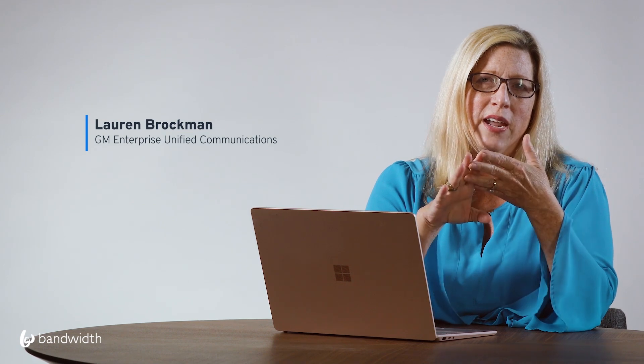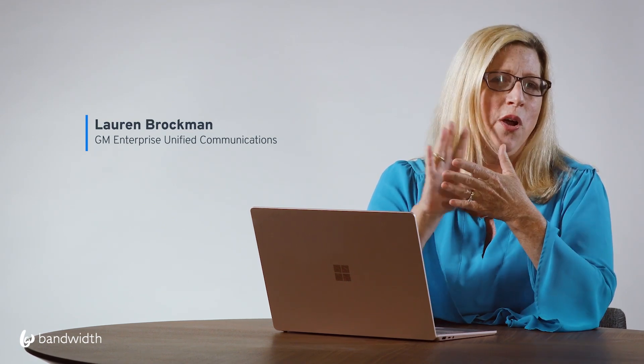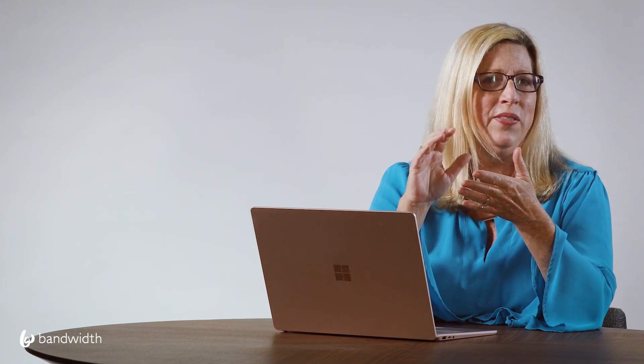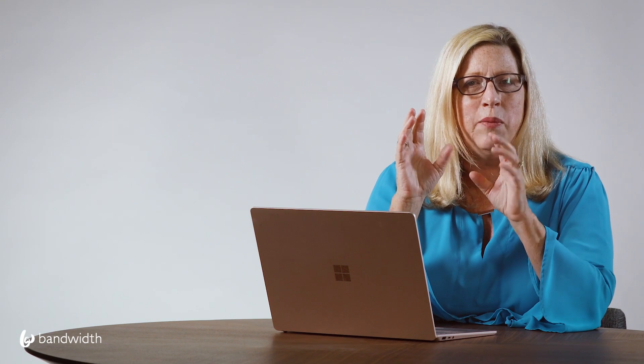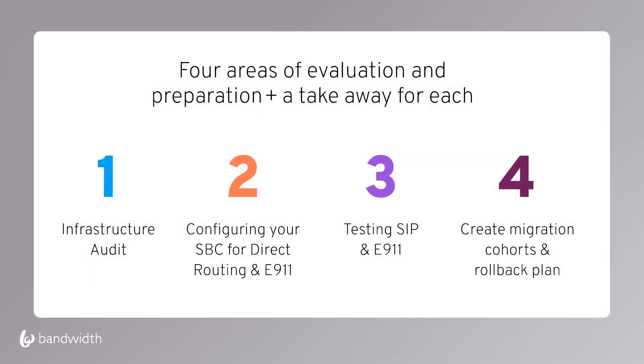Today we're going to cover four key areas. We were looking through our notes on all the things we've learned from customers — things that went really well, things that didn't go so well, and things people didn't think of until the last minute. We tried to put them into a framework: infrastructure audit, configuring your session border controller for direct routing and 9-1-1, testing SIP and E9-1-1, and creating a migration cohort and a rollback plan.